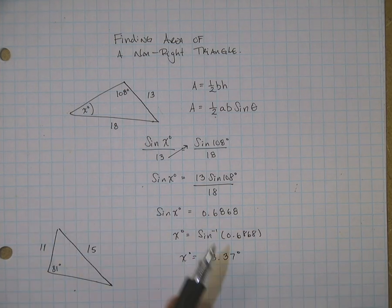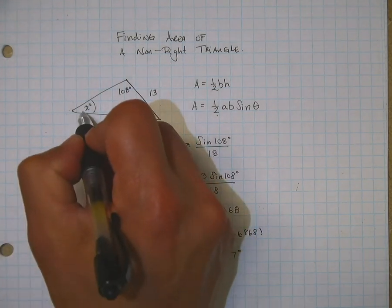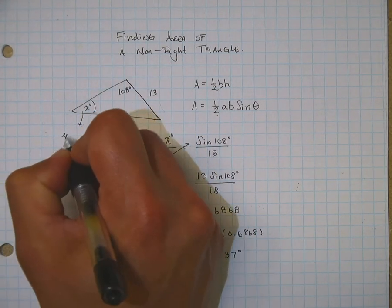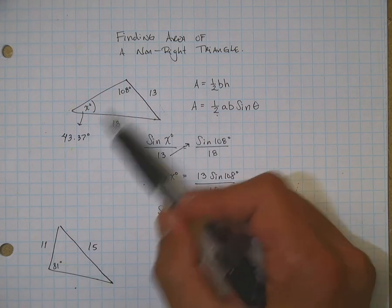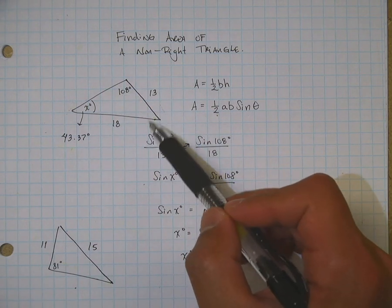So that's this angle right here. That's your x here, 43.37 degrees. Well, now that I have these two angles, I can go ahead and figure out this third one.